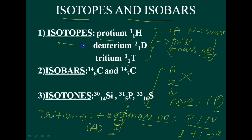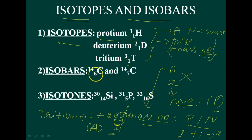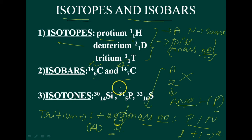These are the isotopes of the hydrogen atom. Now, isobars are species having the same mass number but different atomic numbers. For example, A = 14 and A = 14 — they have the same mass number but different atomic numbers.